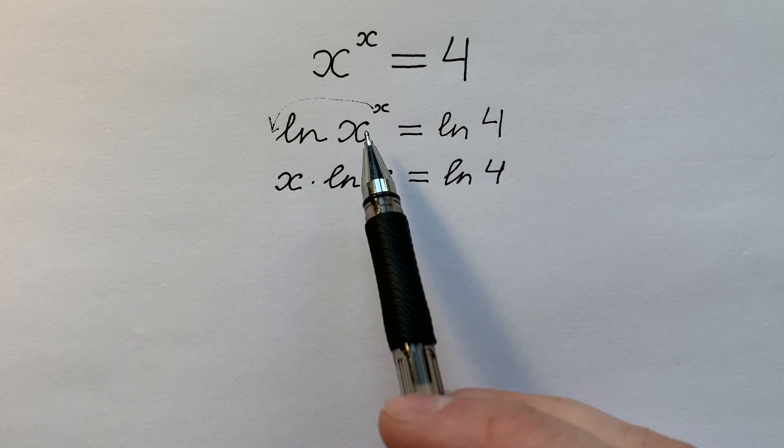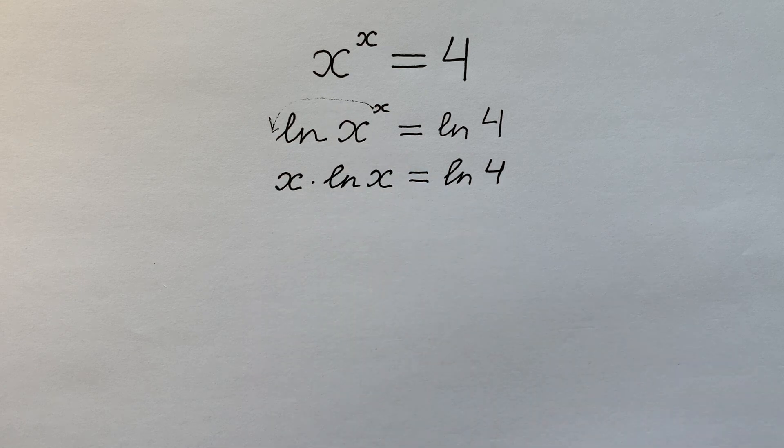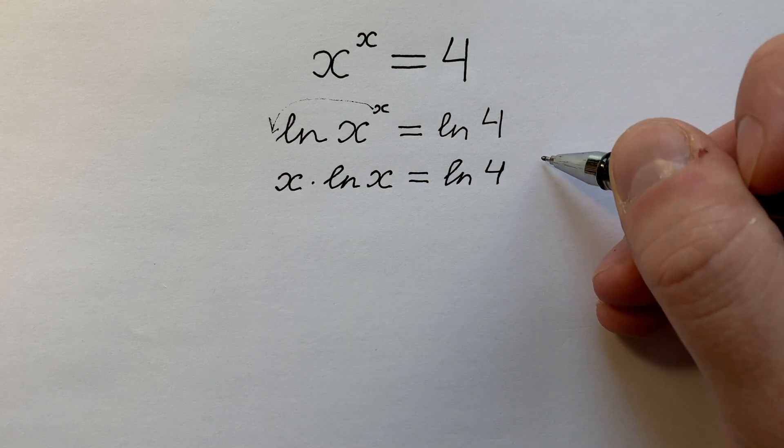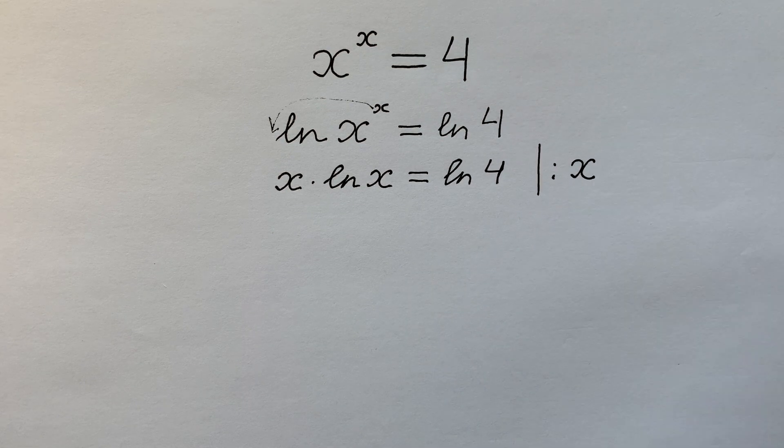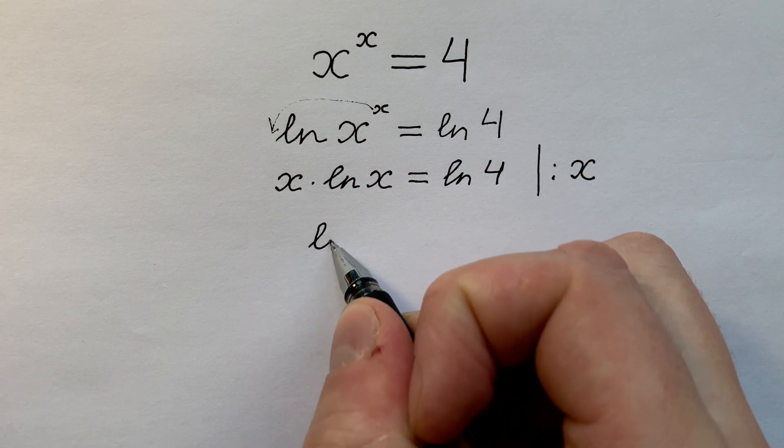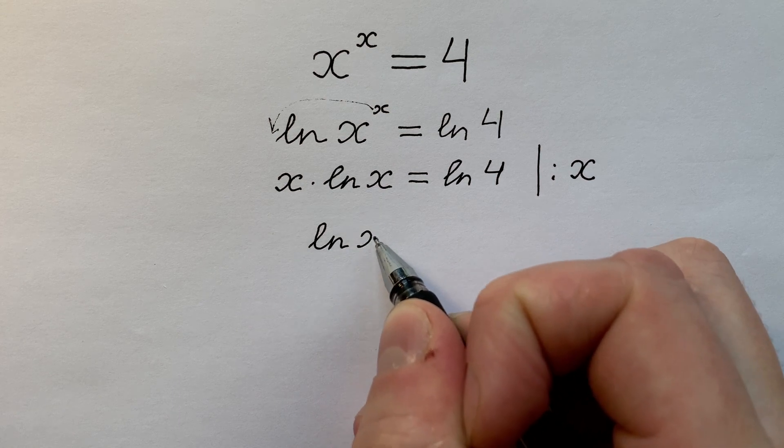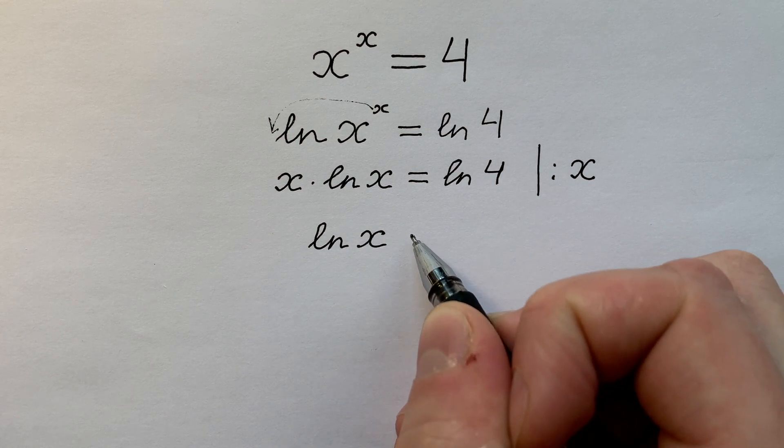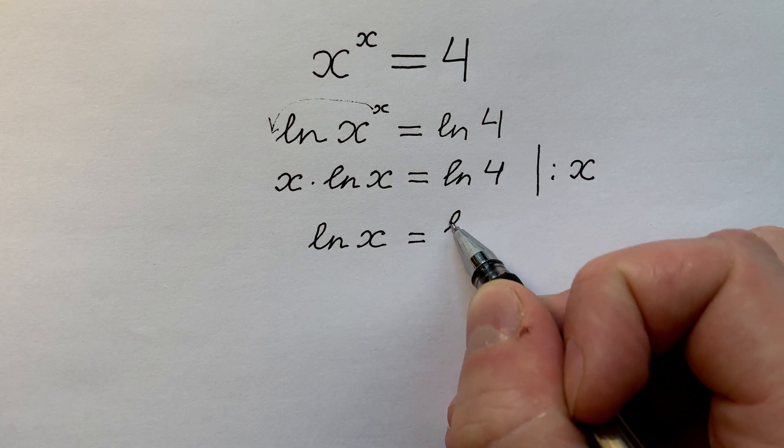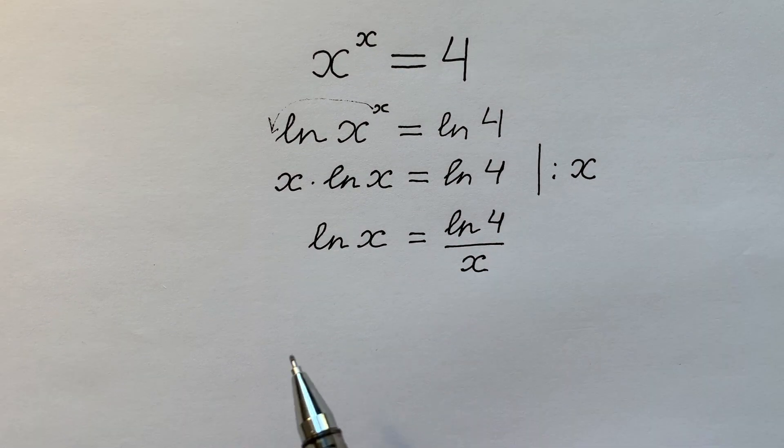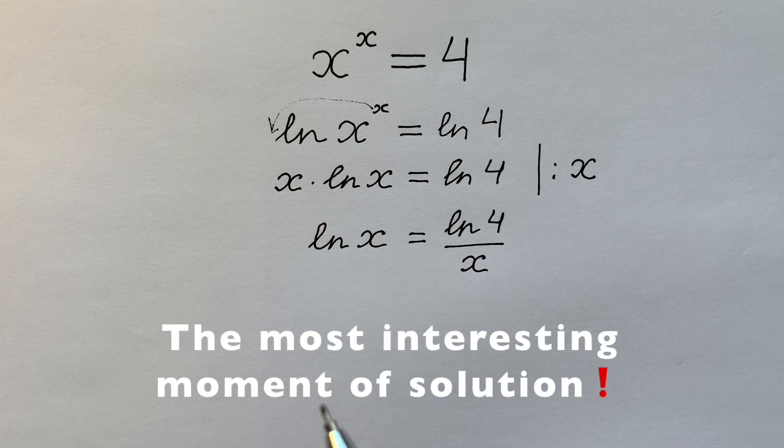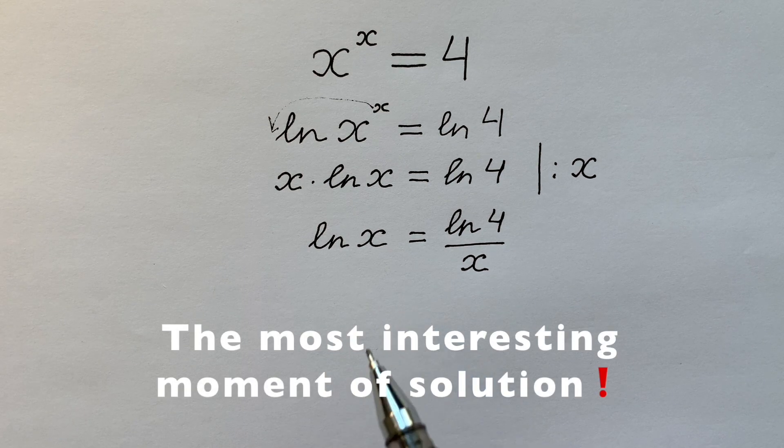As we know that x is bigger than zero, let's divide both sides of this equation by x. And here we have on the left side natural logarithm x, and it equals to natural logarithm 4 divided by x. And here is the most interesting moment of solving this equation.